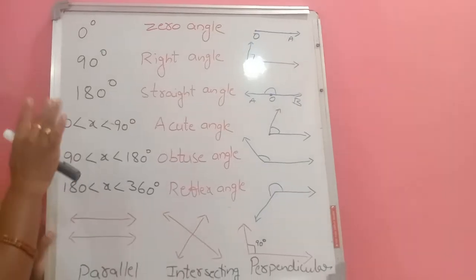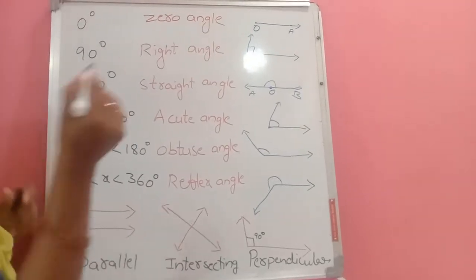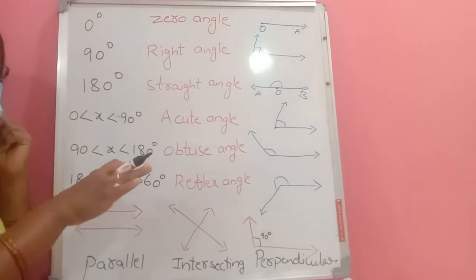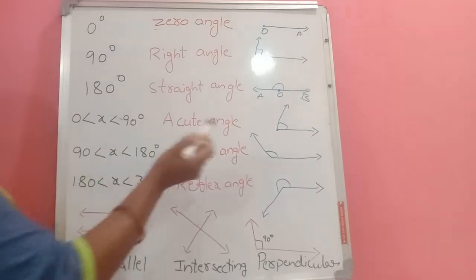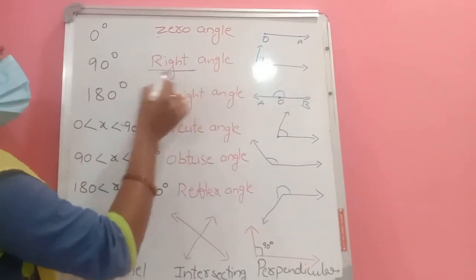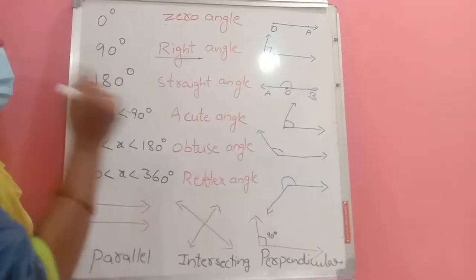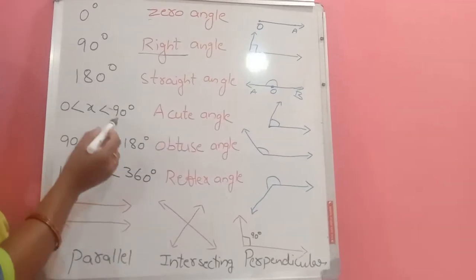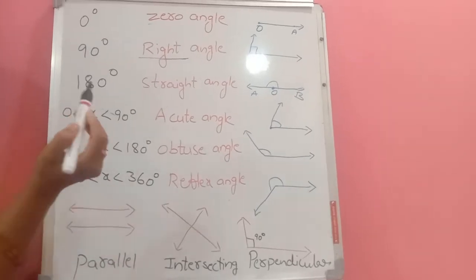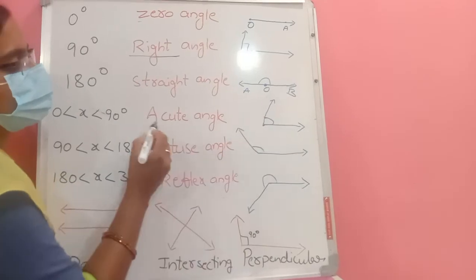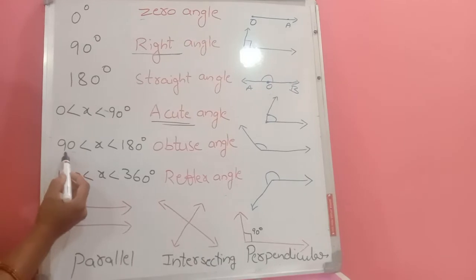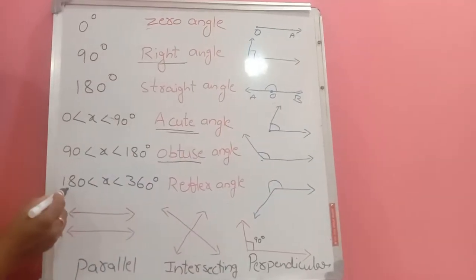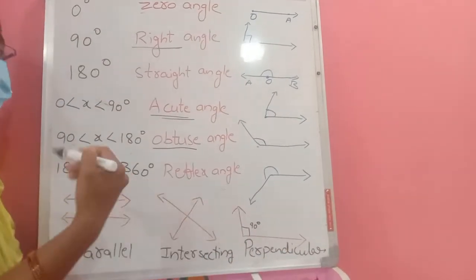For types of angles: if ray OA has not moved at all, the angle is zero degrees — called a zero angle. If it moves exactly 90 degrees, it is called a right angle. If it moves 180 degrees, it is called a straight angle. An angle between 0 and 90 degrees — from 1 up to 89 — is called an acute angle.